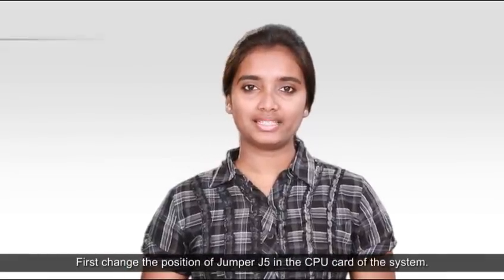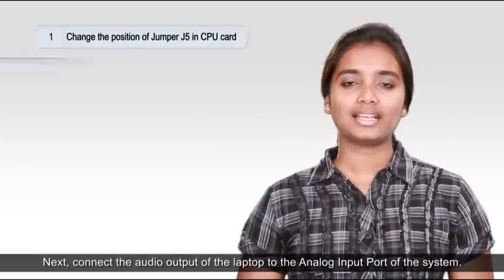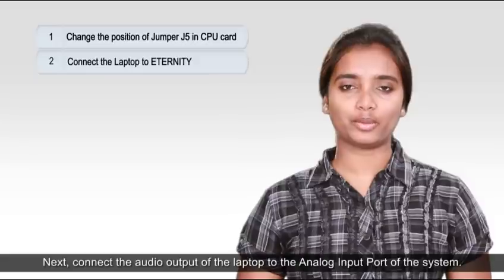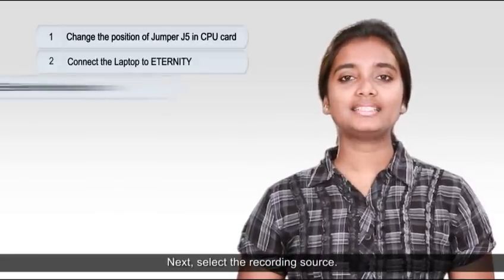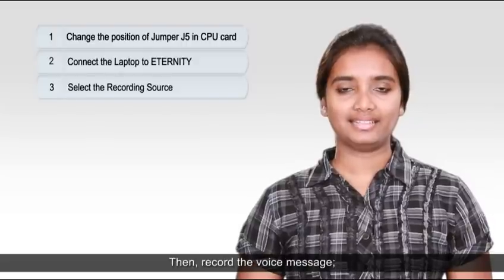There are five main steps: first change the position of jumper J5 in the CPU card of the system, next connect the audio output of the laptop to the analog input port of the system, next select the recording source, then record the voice message, and finally verify the recorded message.